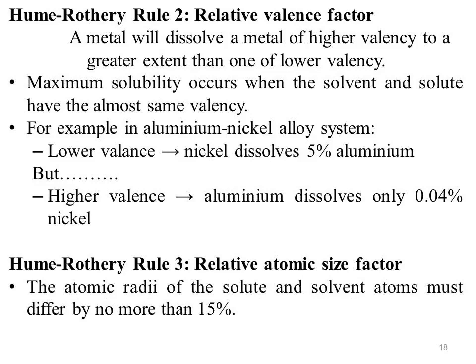Hume-Rothery Rule 2 — Relative valence factor: a metal will dissolve a metal of higher valency to a greater extent than one of lower valency. Metal with lower valency will tend to dissolve metal with higher valency. The solute and solvent atoms should typically have the same valence in order to achieve maximum solubility. Maximum solubility occurs when the solvent and solute have almost the same valency. For example, in the aluminium-nickel alloy system, lower valency nickel dissolves 5% aluminium, but higher valency aluminium dissolves only 0.04% nickel.